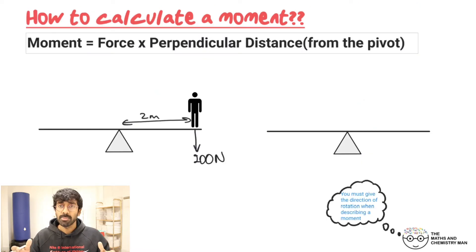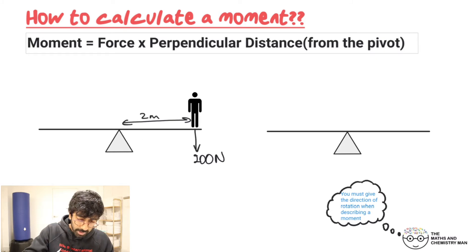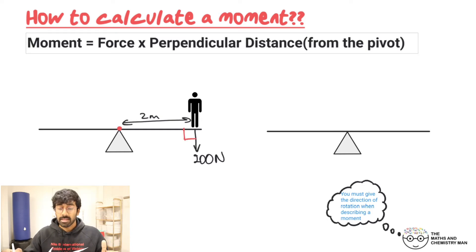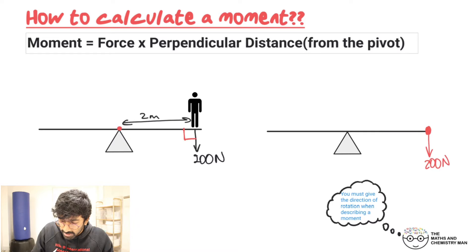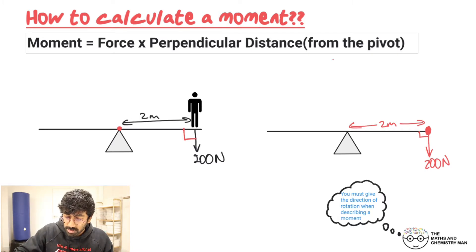Now how do we calculate a moment? There's a formula for it. A moment is calculated by whatever force is acting, multiplied by the perpendicular distance from the pivot. The pivot point is the triangular bit because it tips around that point. For example, the weight of the man is 200 newtons, and the perpendicular distance — which must be at a right angle to the force — is 2 meters. So the moment equals 200 newtons times 2 meters, which gives us 400 newton meters.